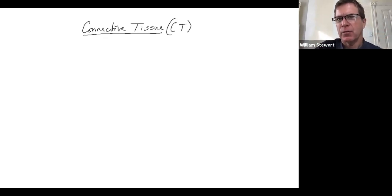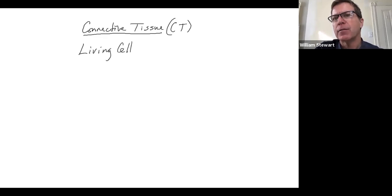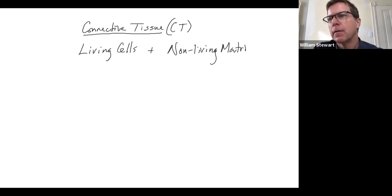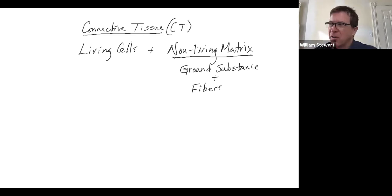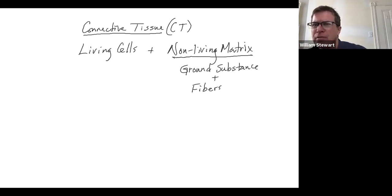All connective tissues are made up of living cells, which is the living component, and a non-living matrix. That non-living matrix is composed of a ground substance and fibers. Ground substance is really some kind of unstructured material — it can be fluid, gel-like, or very hard. Fibers are a fibrous, non-living material secreted by living cells.